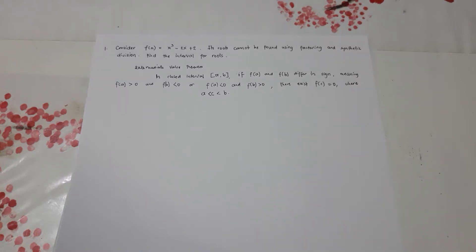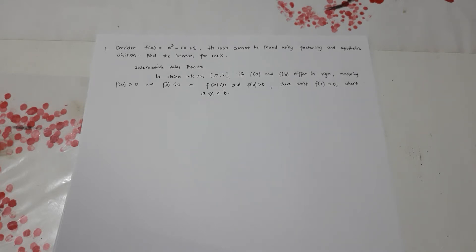Now we're going to solve problems involving continuity. Consider f(x) = x³ - 2x + 2. Its roots cannot be found using factoring or synthetic division. Find the intervals for roots. To solve this, we're going to use the Intermediate Value Theorem. Given f(x) on a closed interval [a, b], if f(a) and f(b) differ in sign — meaning f(a) > 0 and f(b) < 0, or f(a) < 0 and f(b) > 0 — then there exists a c where f(c) = 0 and c is between a and b.